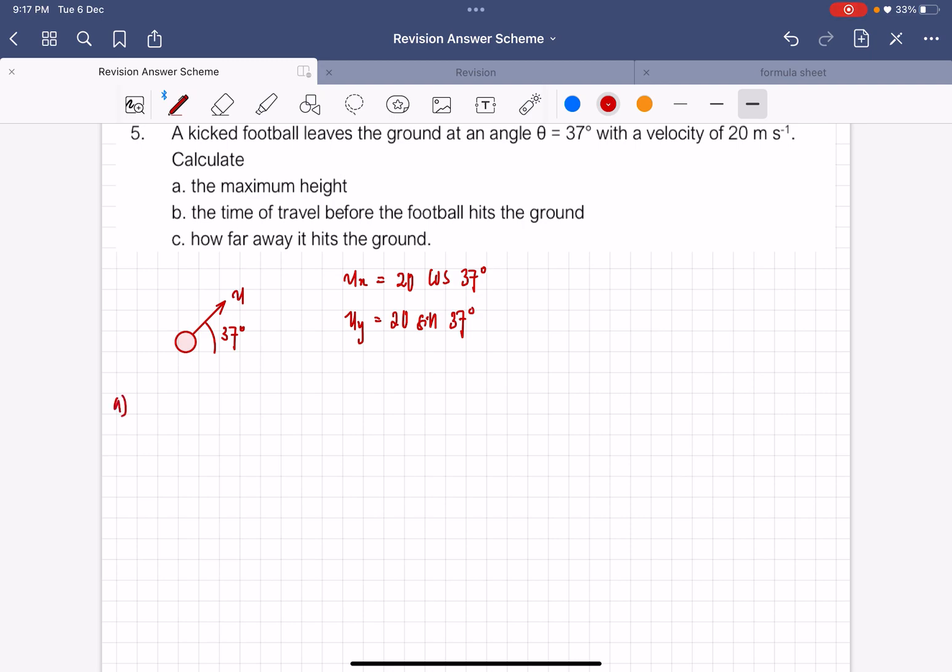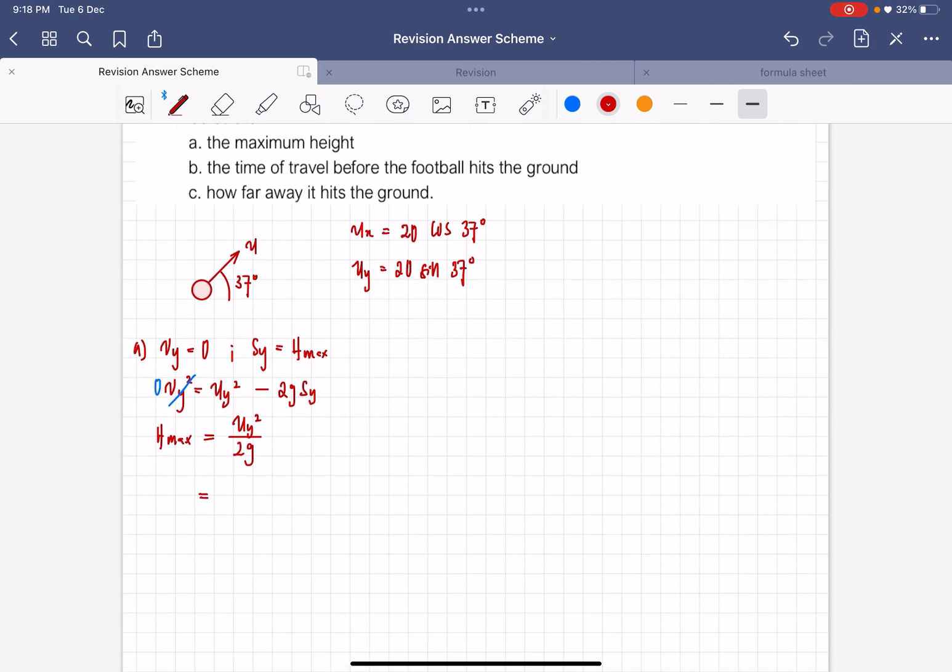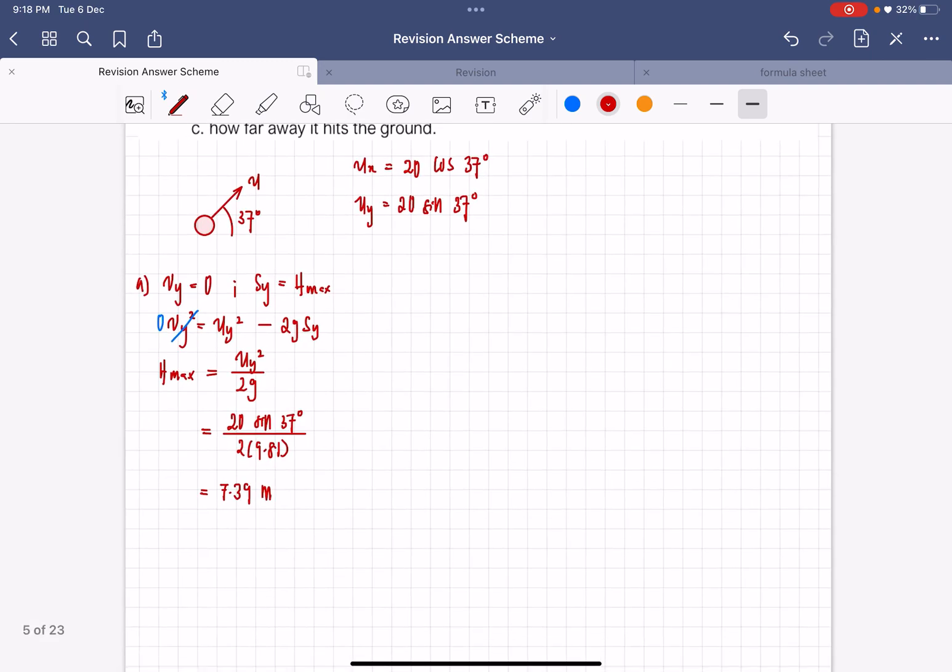So we have to calculate its maximum height. The maximum height is where the velocity at the y component equals 0. Let Sy be equal to H max. This is going to be Vy² equals Uy² minus 2gSy. We know that Vy here equals 0, so our equation is going to be H max equals Uy² over 2g. It's going to be 20 sin 37 degrees squared over 2 times 9.81, which gives you 7.39 meters.